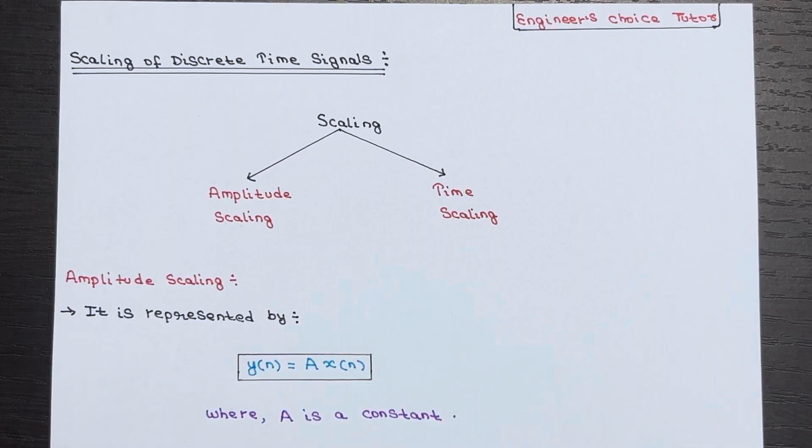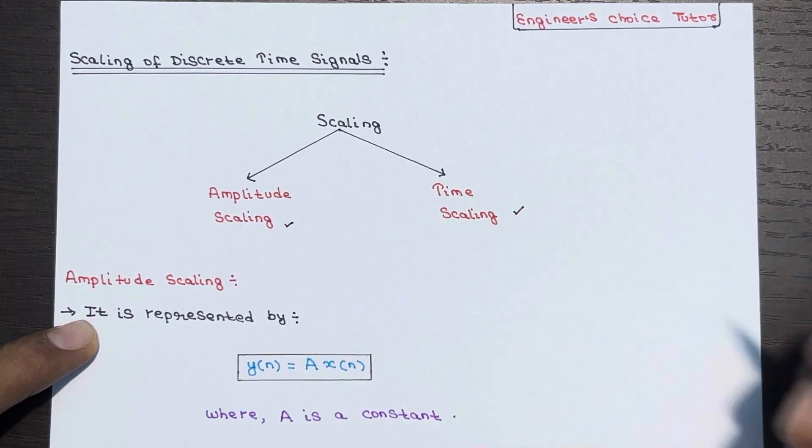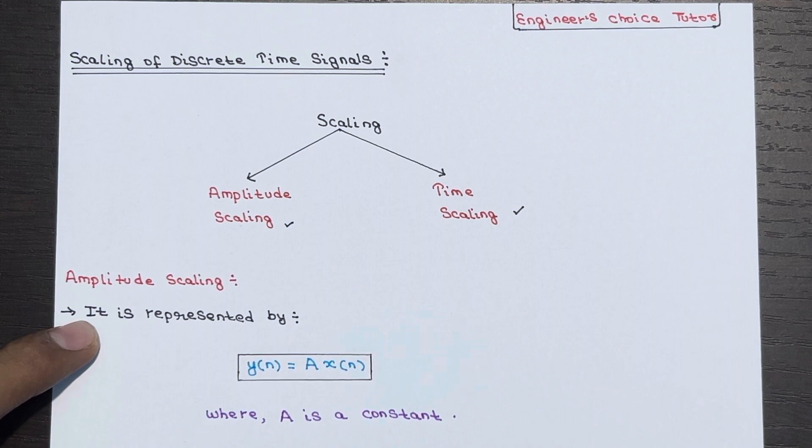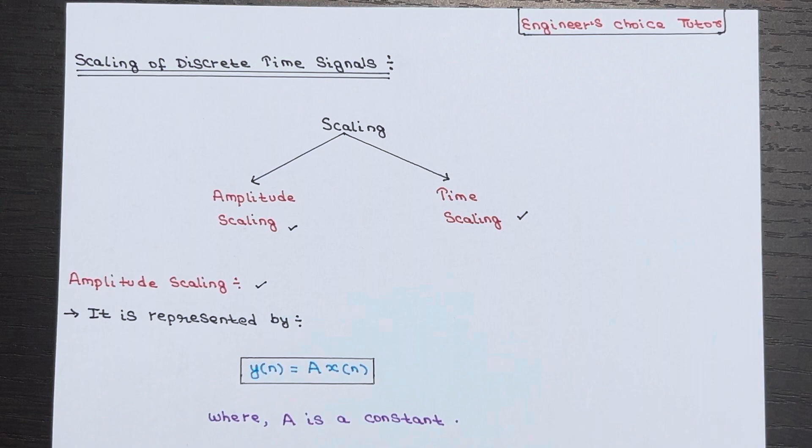Hey everyone, today's lecture is about scaling discrete time signals. Scaling can be done in two ways: amplitude scaling and time scaling. In this lecture, we will focus on amplitude scaling, which is represented by the equation